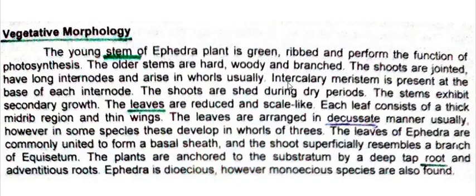You have studied this intercalary meristem in your third year class. In the nodal region where the leaf arises, the intercalary meristem is present. These shoots are shed during dry periods when there is a deficiency of water, and afterwards they grow again. The stem shows secondary growth.